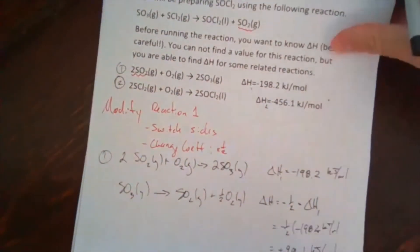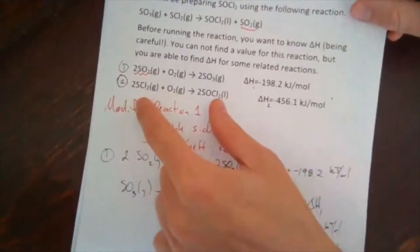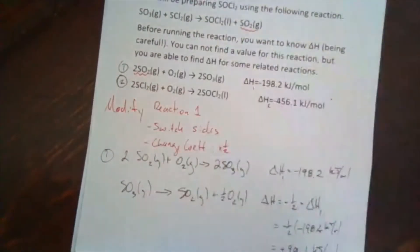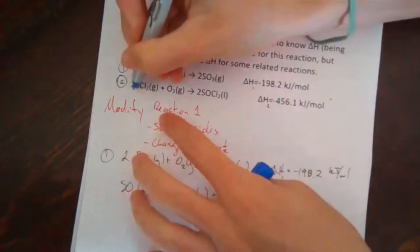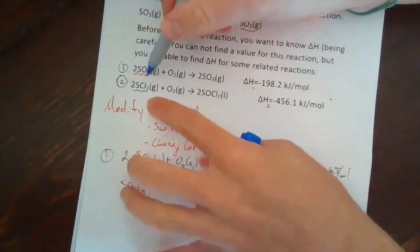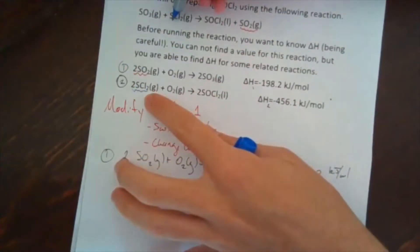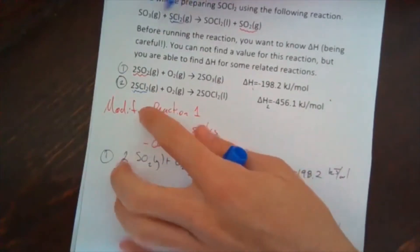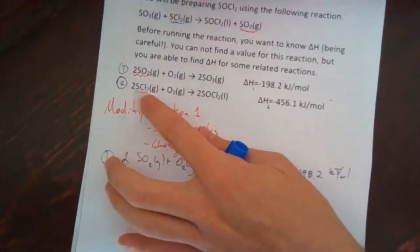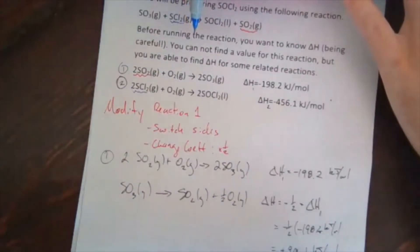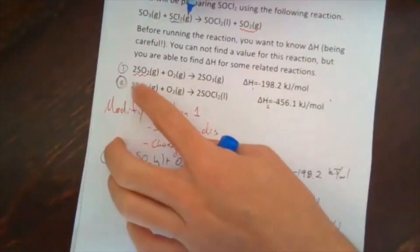Alright, so we've got reaction one set, now we need to fix reaction two. And so if we key in on reaction two, I could say, look at like, for example, SCl2. And SCl2 is right here. And so this is a reactant, this is a reactant, so I don't need to change sides. The only thing I need to do is adjust my coefficients.